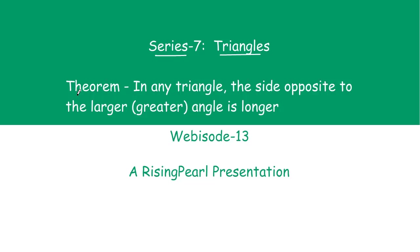Today the theorem that we are going to prove is: in any triangle, the side opposite to the larger or greater angle is longer. So, if you have any triangle, the side which is opposite to the greater or larger angle, that side will be longer. Let us find out what this theorem is about and then how we can prove it.